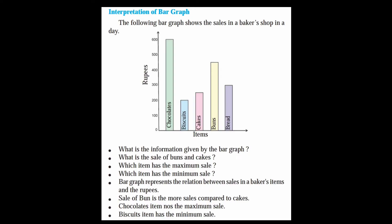The bar graph represents the relation between sales in a baker's shop items and their sales in rupees. What is the sale of buns compared to cakes?